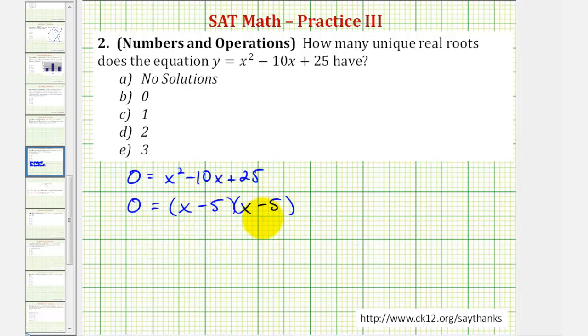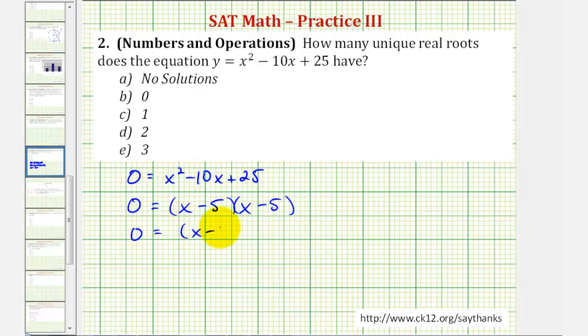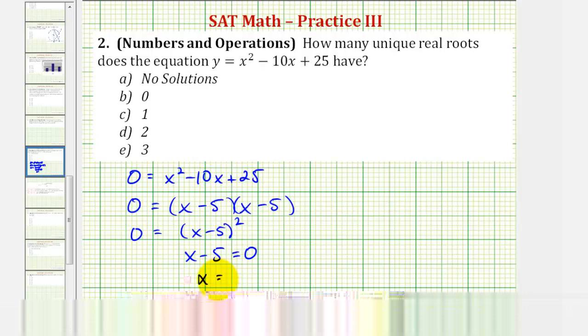Notice how in this case we have two equal factors, which means this is a perfect square trinomial. And if we wanted to, we could write this as zero equals the quantity x minus five squared. This will only be zero when x minus five equals zero or when x equals positive five.